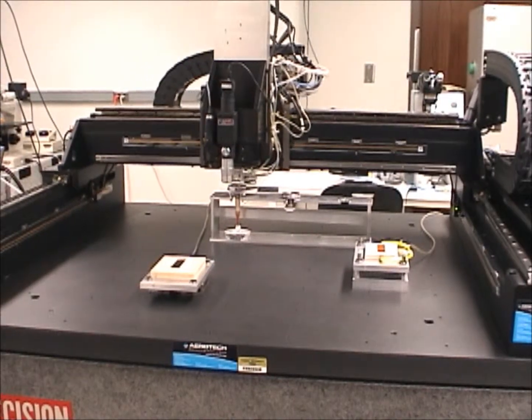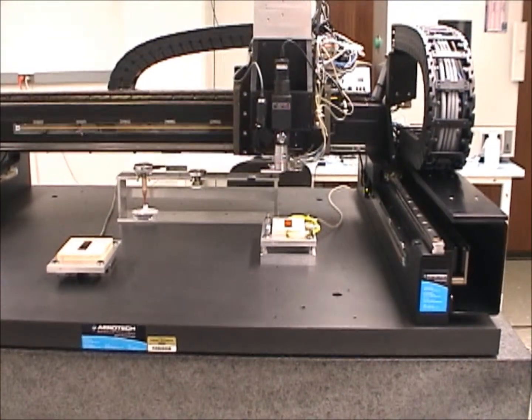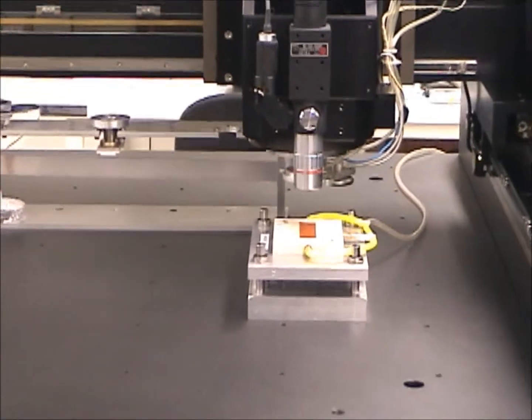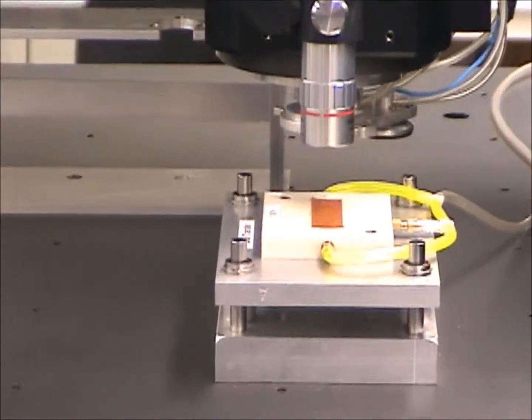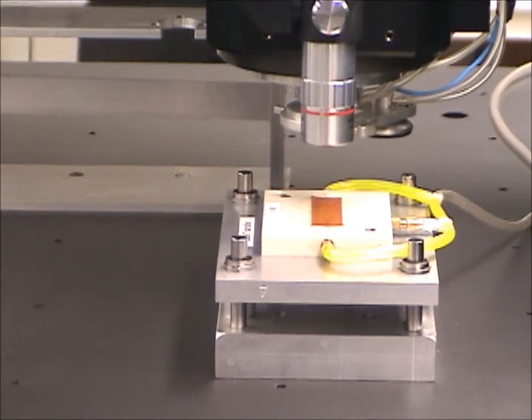All right, the gantry is moving to the location of the HDI and will acquire fiducials, one at each end of this mechanical grade HDI we have, a piece of Kapton with a couple pieces of silicon glued to it.